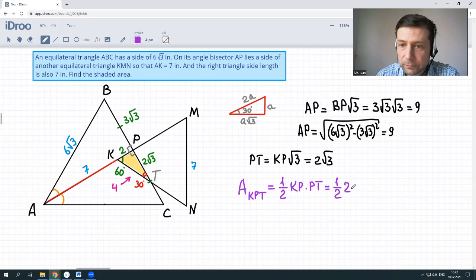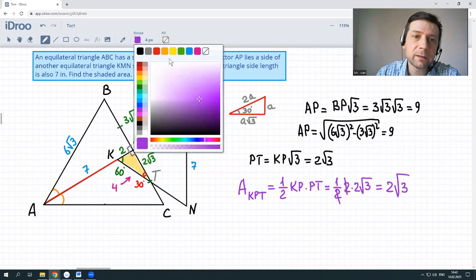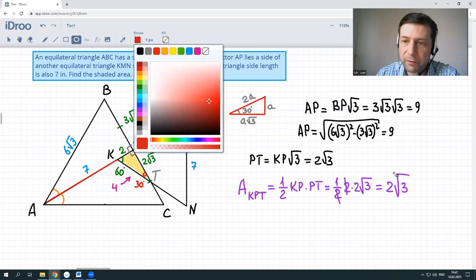KP is 2. PT is 2√3. 2 and 2 are cancelled out. And we have 2√3, the answer to this particular problem. That's perfectly done. Area is 2√3.